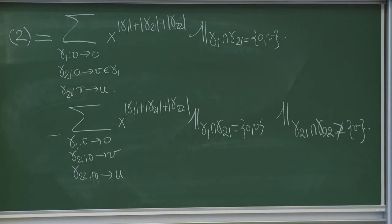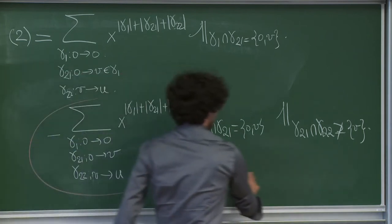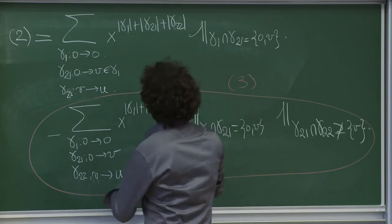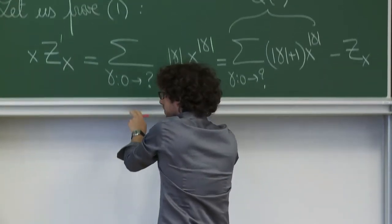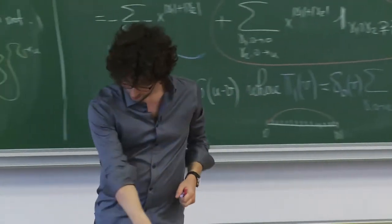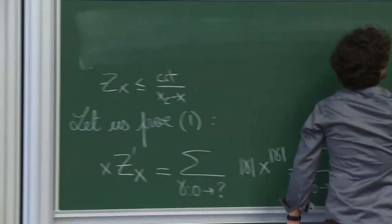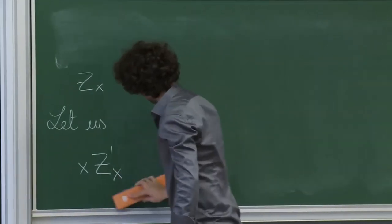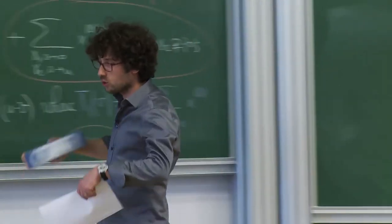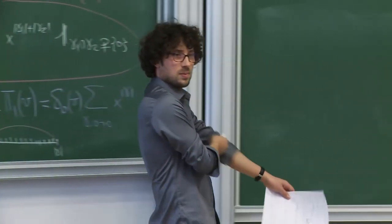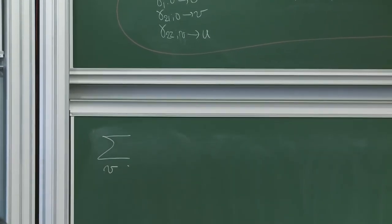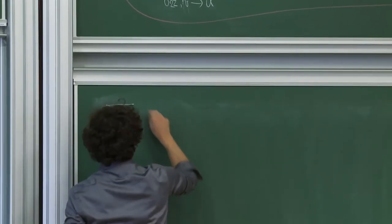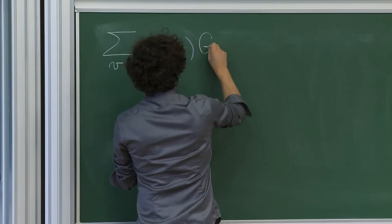Let me do one last step, because something happens when you look at pi_3. So term 3: we decompose gamma_2_2 at its first intersection with gamma_2_1, which is going to be W. I end up with gamma_1 from 0 to 0, gamma_2_1 from 0 to V, gamma_2_2_1 from V to W, and gamma_2_2_2 from W to U. And this term is written as sum over V of pi_3(V) times g(u minus V), where pi_3(V) is the sum over gamma_1 from 0 to 0, gamma_2 from 0 to V, gamma_3 from V to W, with indicator that gamma_1 intersects gamma_2 at {0,V} and gamma_2 intersects gamma_3 at W.